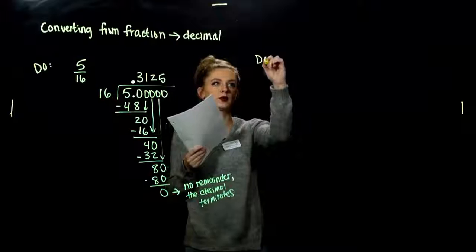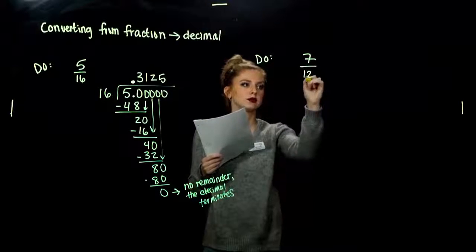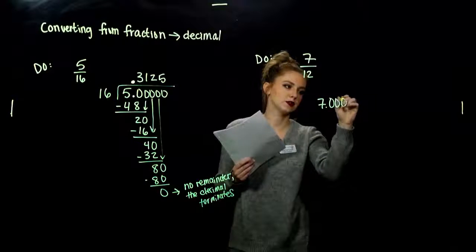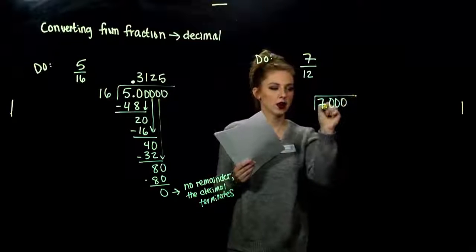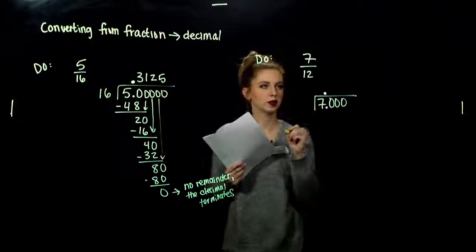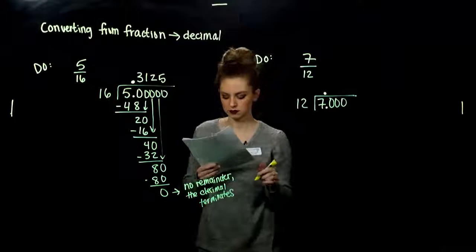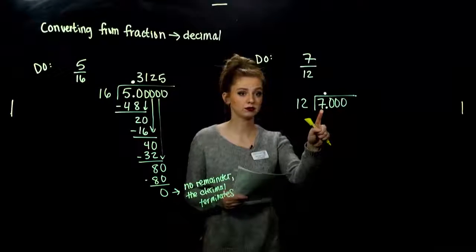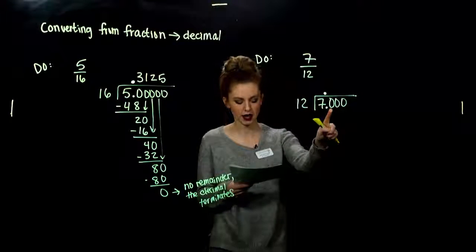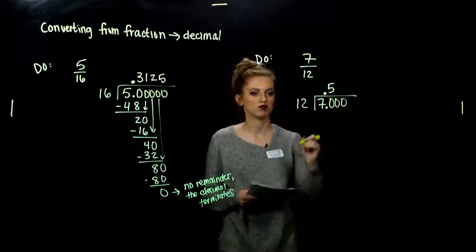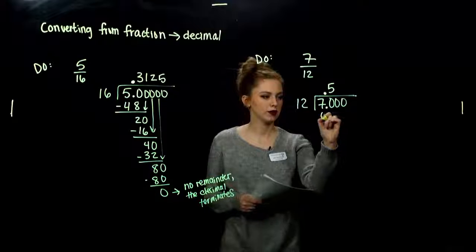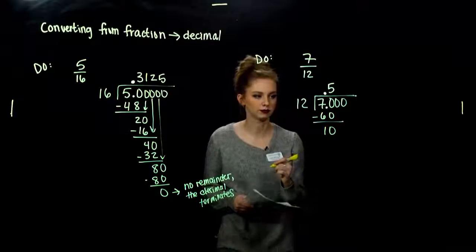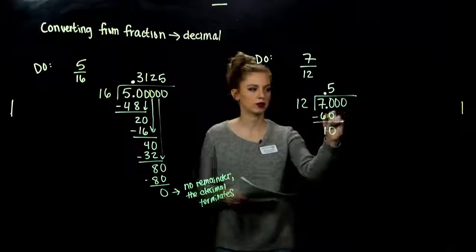Let's do the next example: converting 7 twelfths into decimal notation. So again, 7 point — I know I'm going to need some zeros, so I'll write them in right now. Wherever my decimal point is down here, it's going to have to be up in the quotient in the same place. And I'm dividing by 12. Does 12 go into 7? Nope. So 12 into 70 — how many times without going over? 5. 5 times 12 gives me 60, so looking at that difference I've got 10. 12 doesn't go into 10, so we need to bring down another factor.